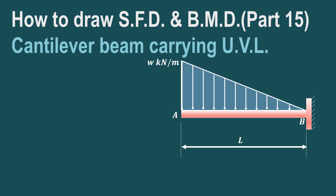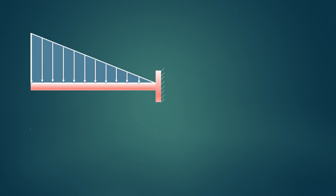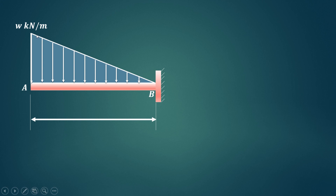In this video we'll try to understand how to draw shear force diagram and bending moment diagram in case of a cantilever beam carrying uniformly varying load. The arrangement of the cantilever beam is as shown. It carries a uniformly varying load from W kN per meter at the free end up to zero at the fixed end.